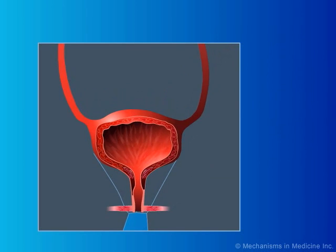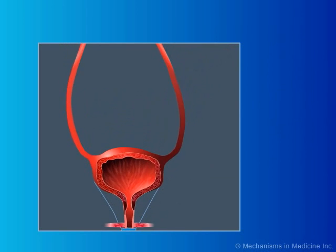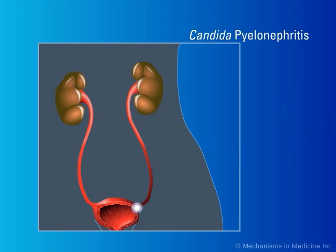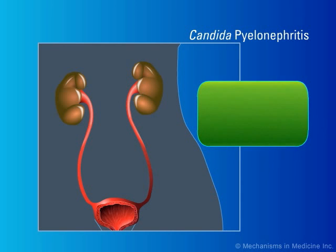Patients may also suffer from upper urinary tract infection, candida pyelonephritis. It results most commonly from ascending infection from the lower urinary tract, but on rare occasions may be caused by hematogenous seeding of the kidney. Symptoms of candida pyelonephritis may include fever and costovertebral angle tenderness.